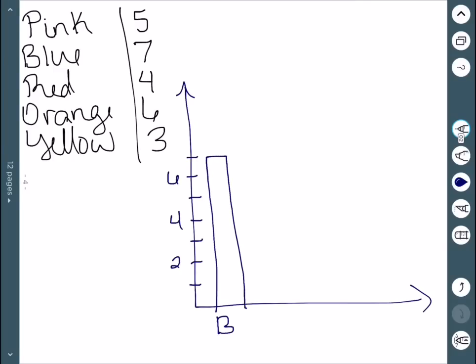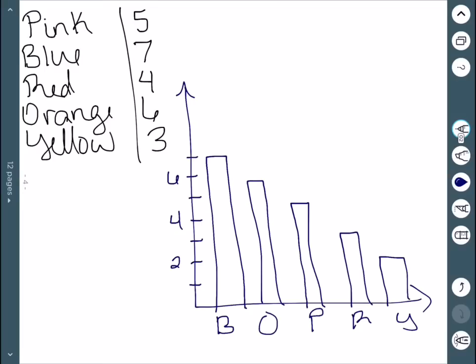The next highest was orange at 6. We then had pink at 5. We had red at 4. And then we had yellow at 3. So this is a Pareto chart. We just arranged our bars so that the highest came first, and the lowest came last.